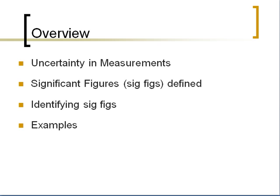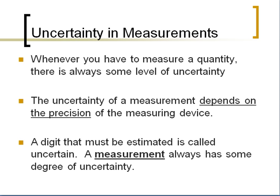The first part is uncertainty in measurement. Whenever you have to measure a quantity, there's always some level of uncertainty. The uncertainty of a measurement depends on the precision of the measuring device. You'll find that you'll pay a lot more money for devices that are more precise. A digit that must be estimated is called uncertain, and a measurement always has some degree of uncertainty.